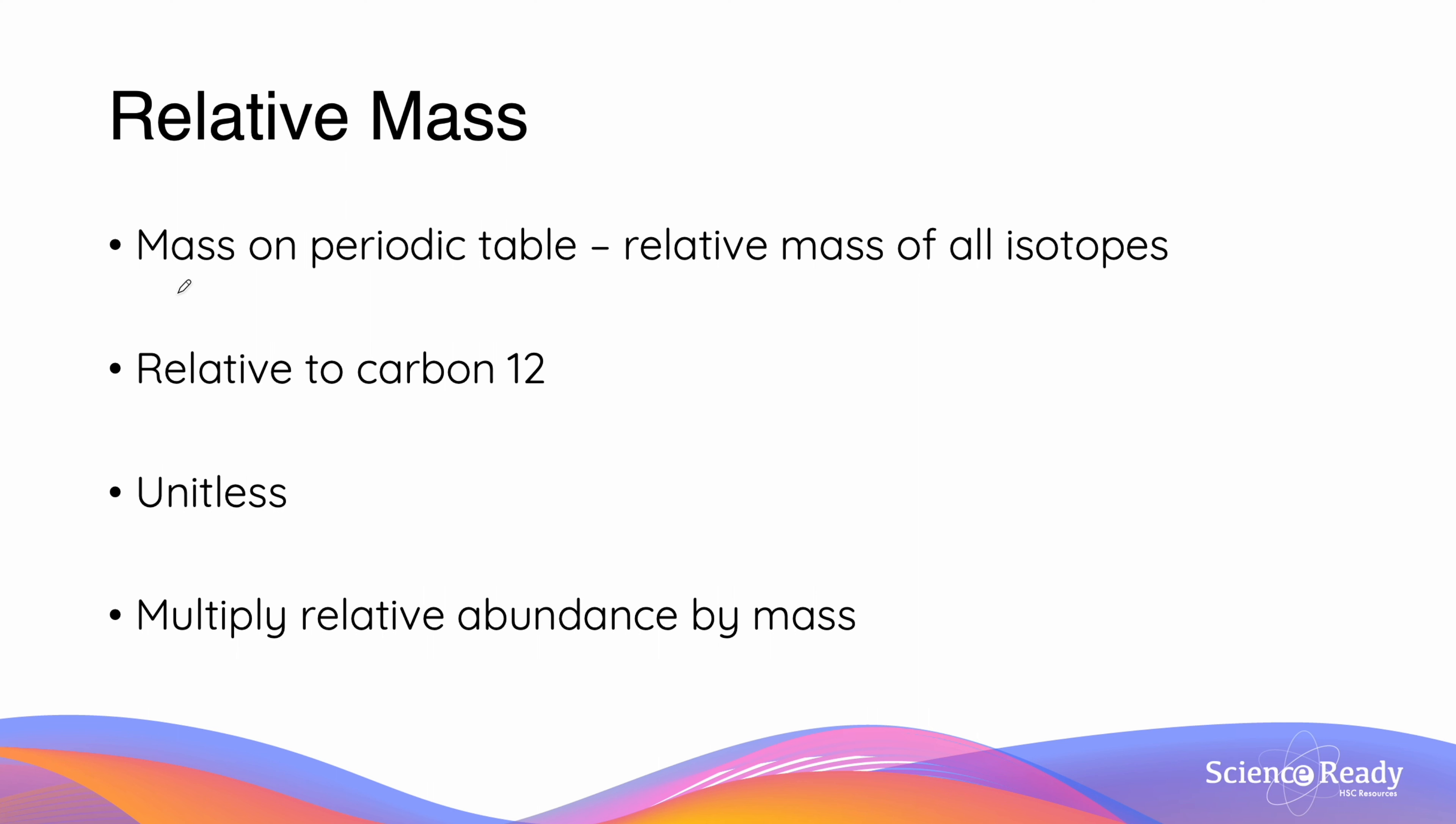Because there are often different isotopes of different elements, the masses which are given to you on the periodic table is not the actual mass of the element. These masses are actually what is known as the relative mass of all isotopes. What are these relative masses relative to? They are relative to the mass of carbon 12.